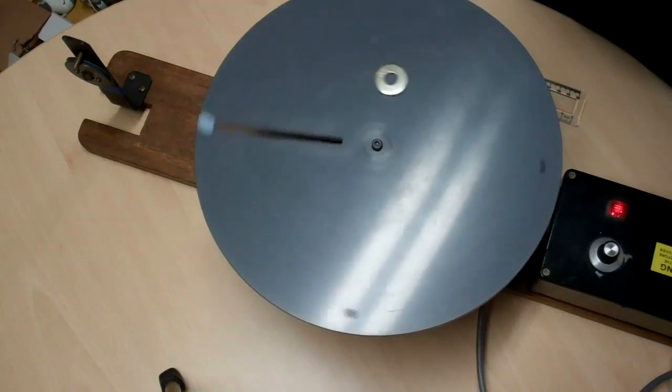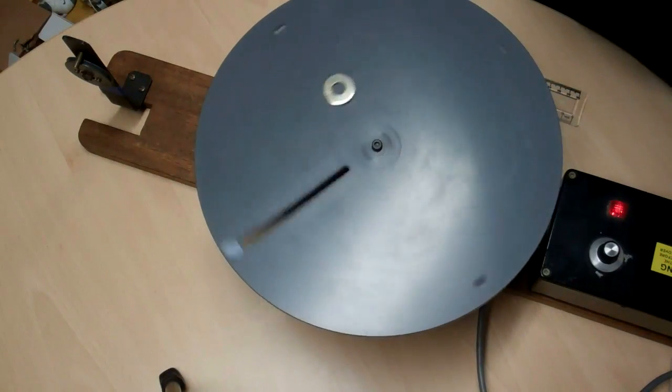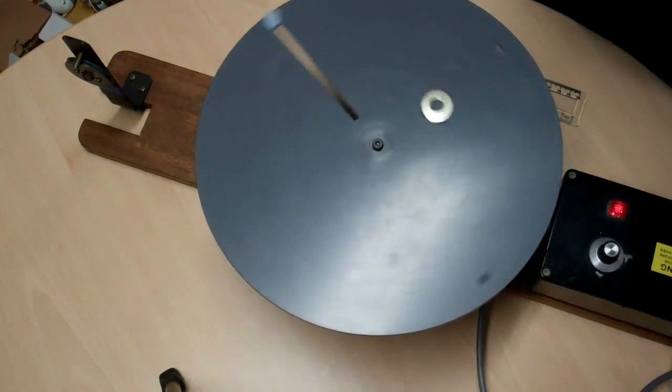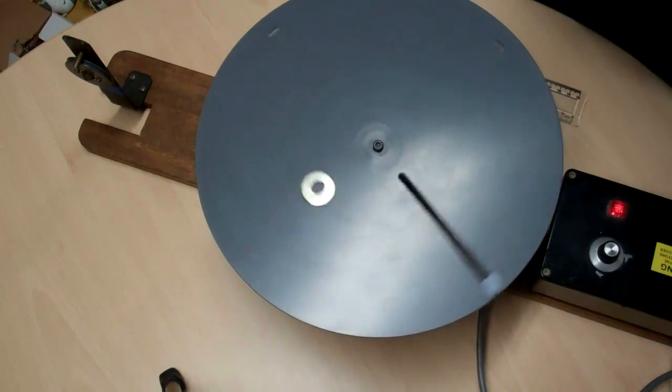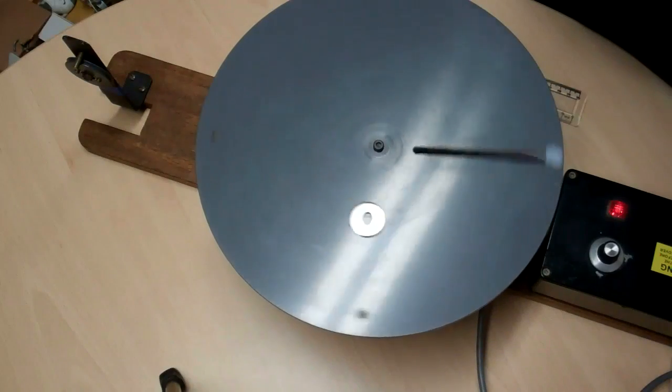What I would like you to do is to count the number of revolutions in a certain period of time and make an estimate of the angular speed of the turntable. I'm just going to let it run now for a few moments so that you can do that.